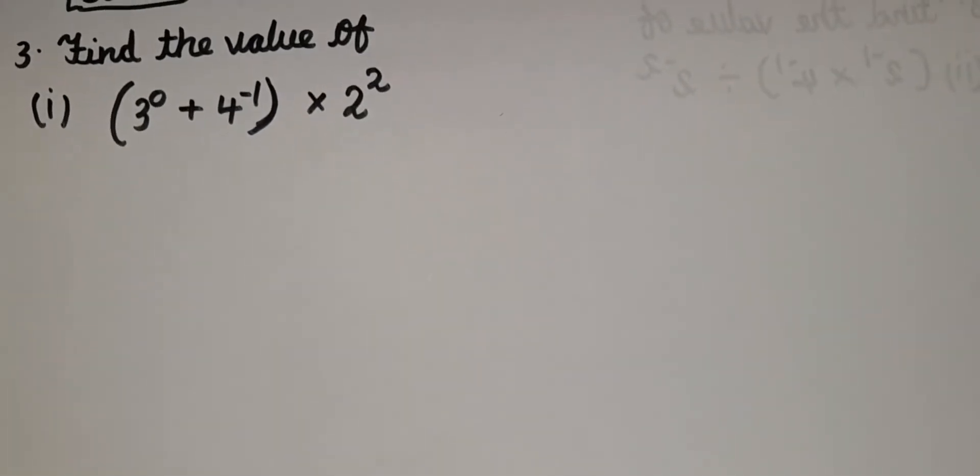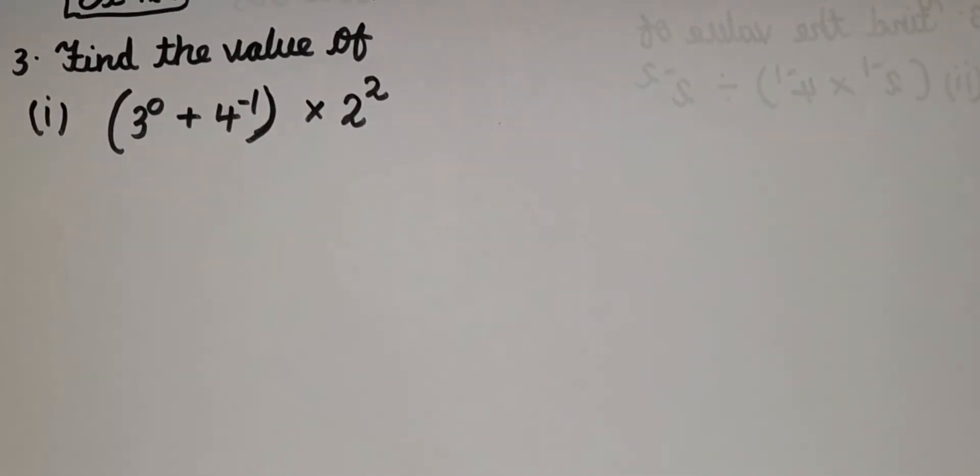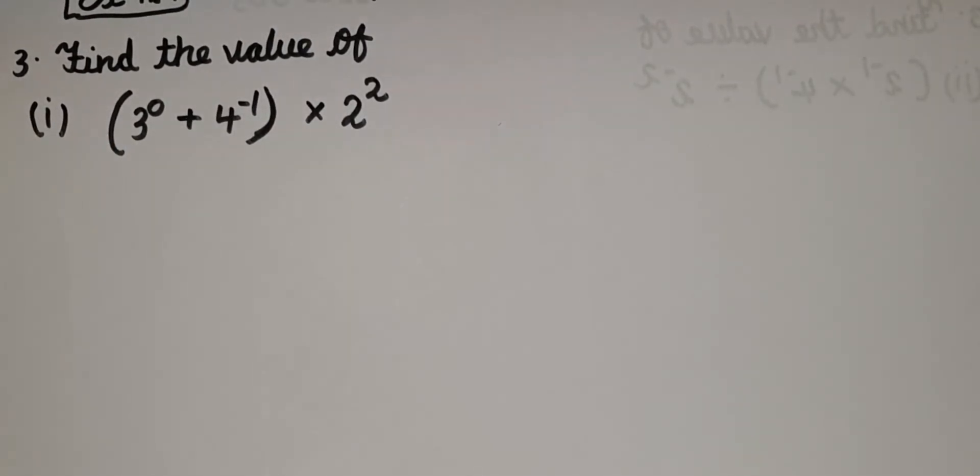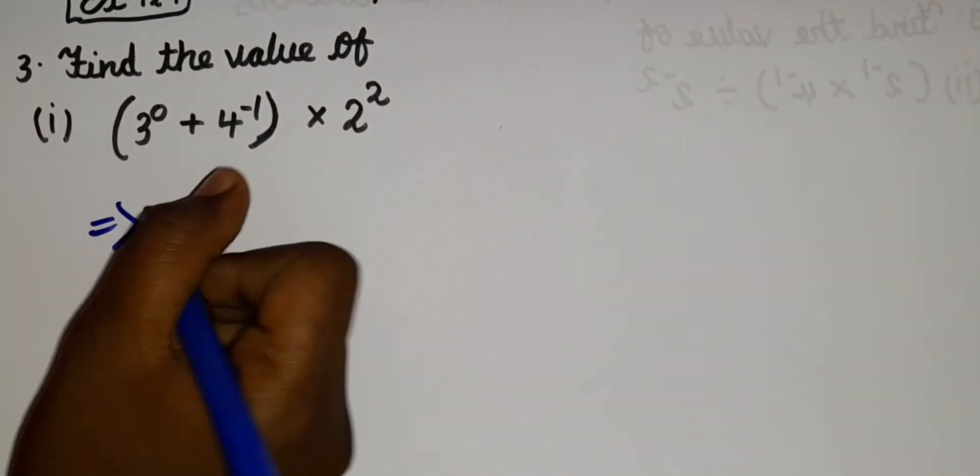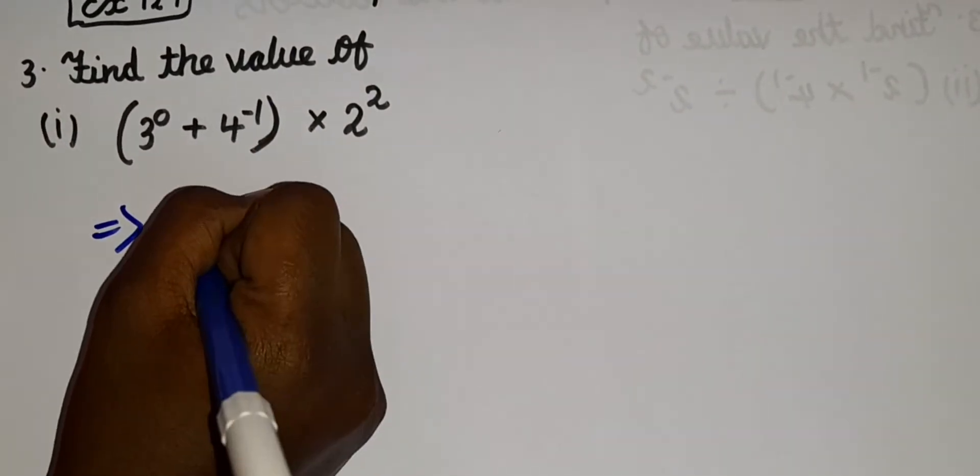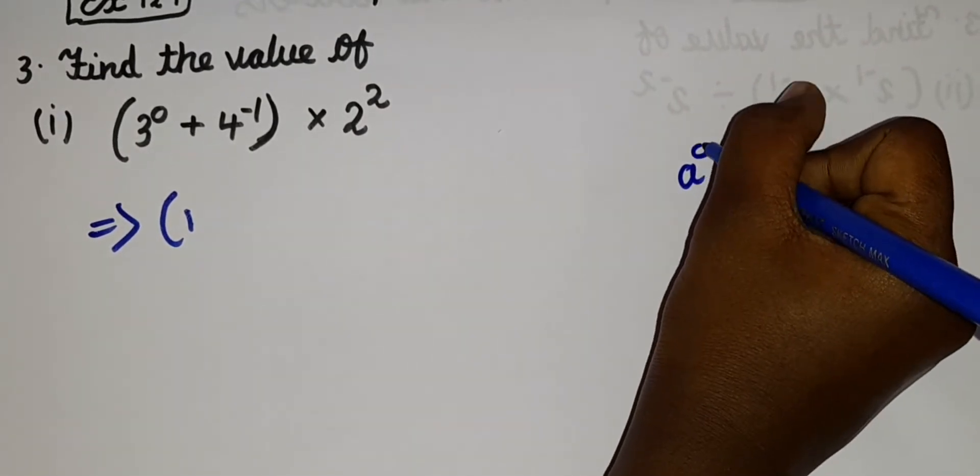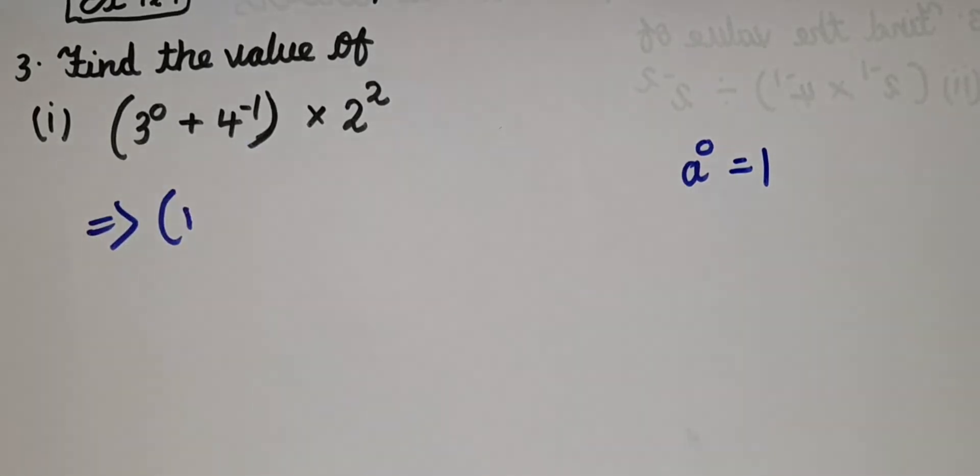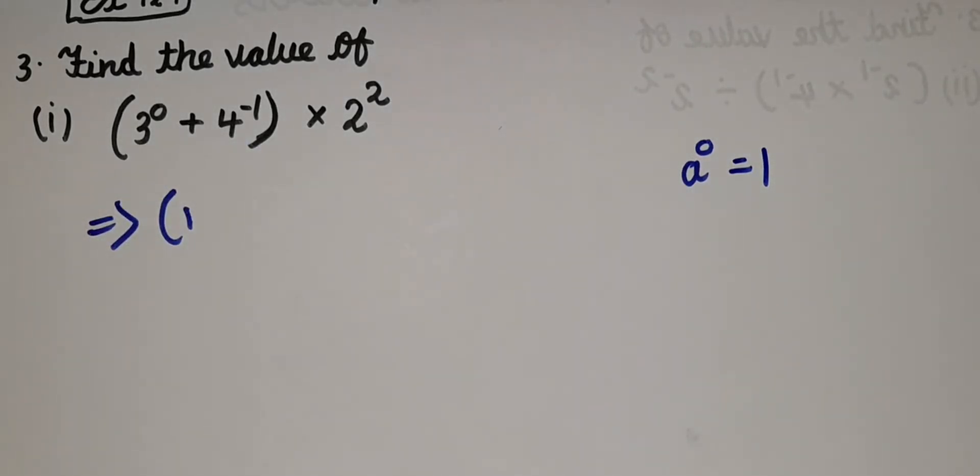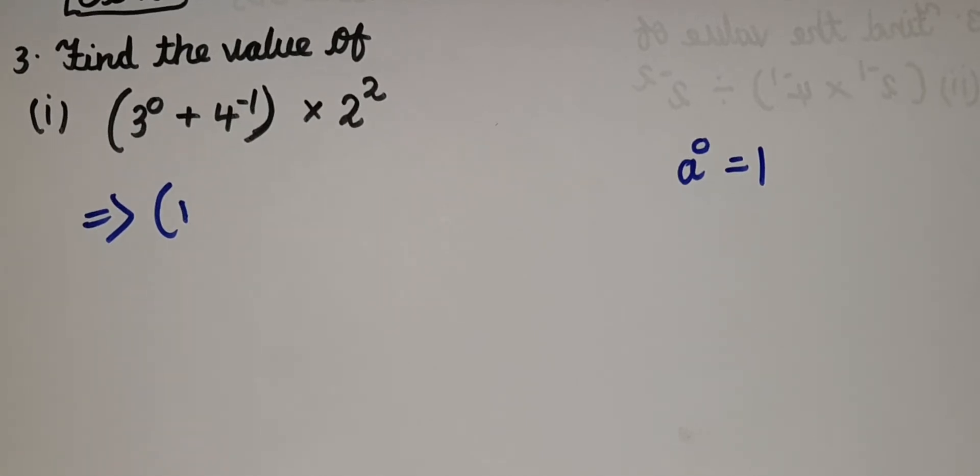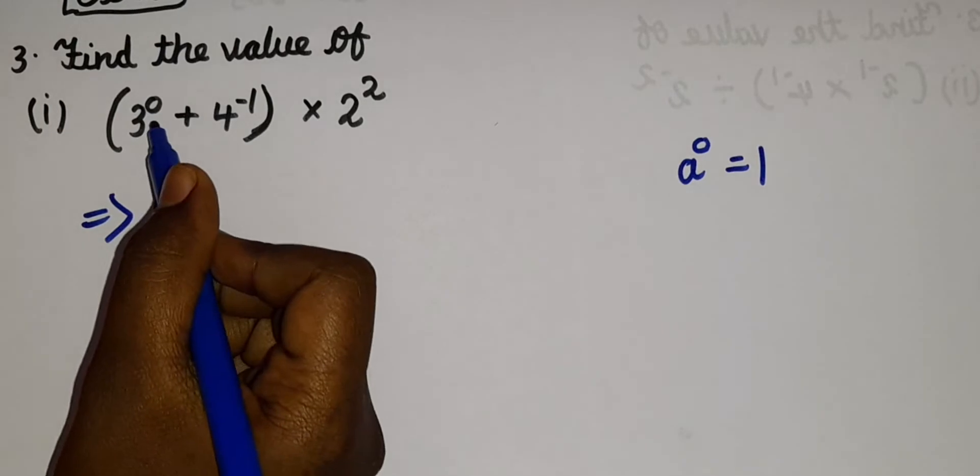So now, as you guys know, when we have any number with the power 0, we should write it as 1. Let me explain. Let me write that formula here. So a^0 = 1. So any number with the power 0, the answer is going to be 1 only. Any power with the number 0 is equal to 1. So here we have the power 0, that's why I wrote it as 1.